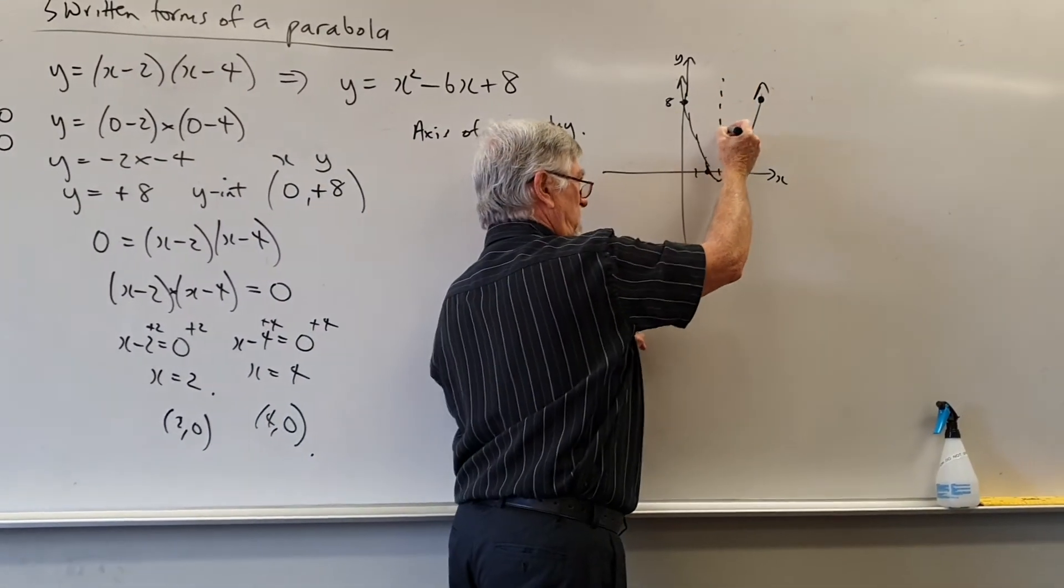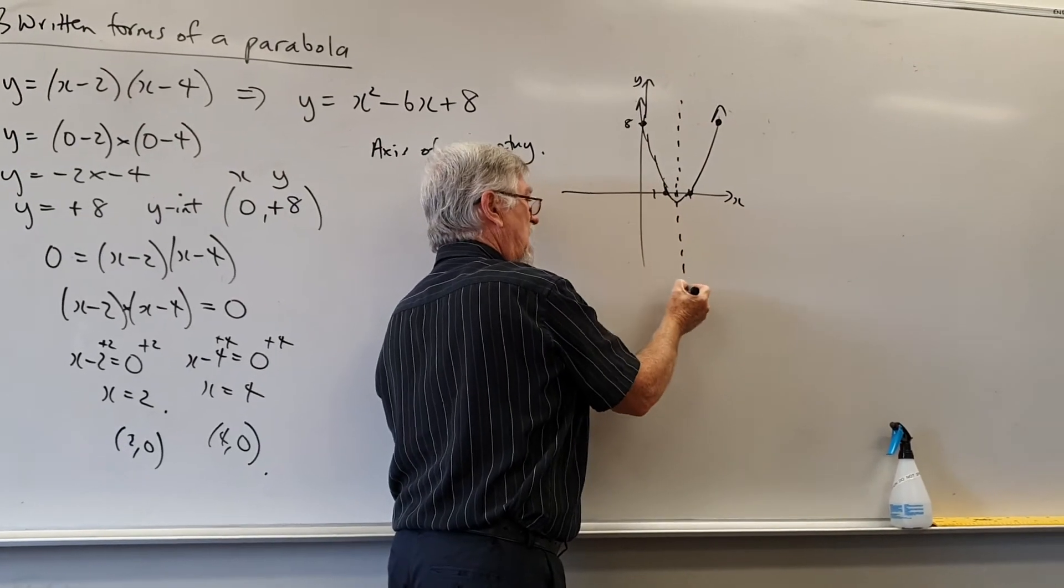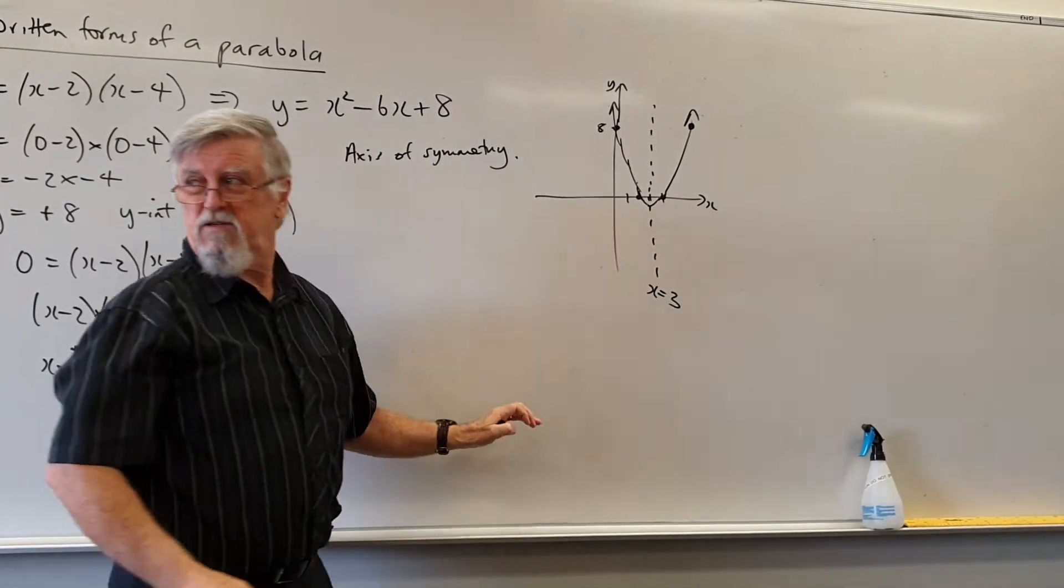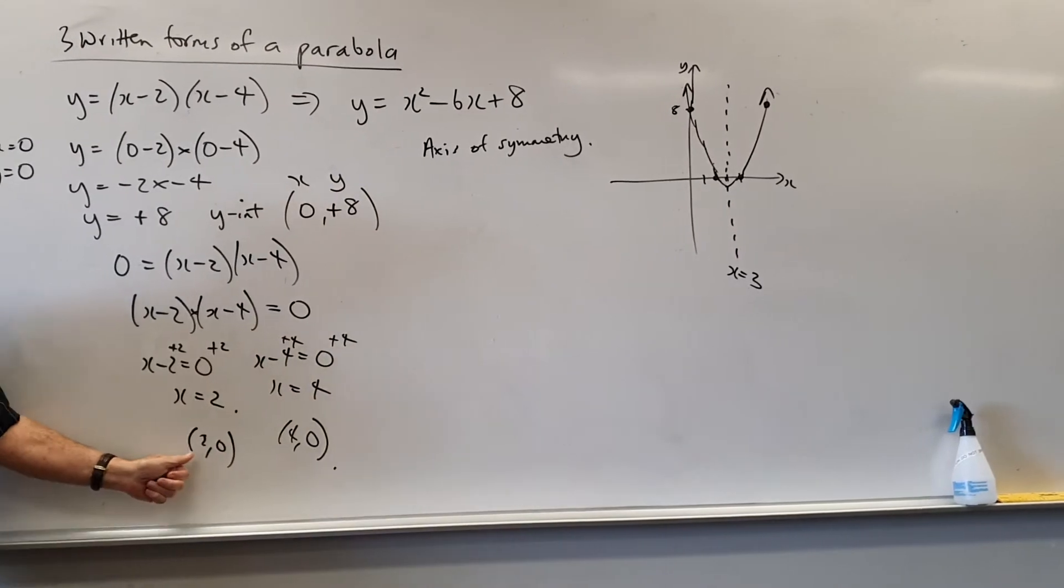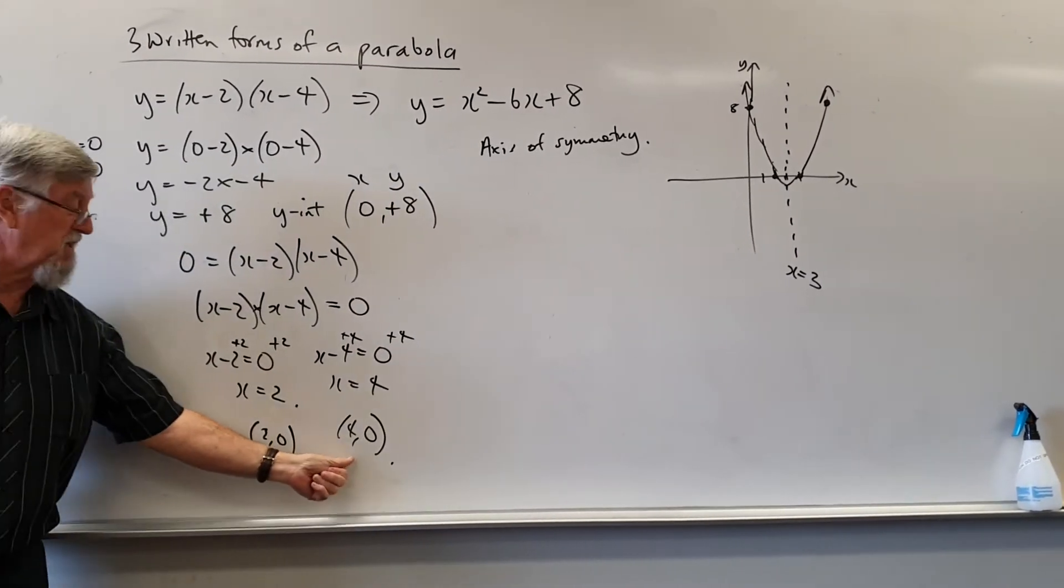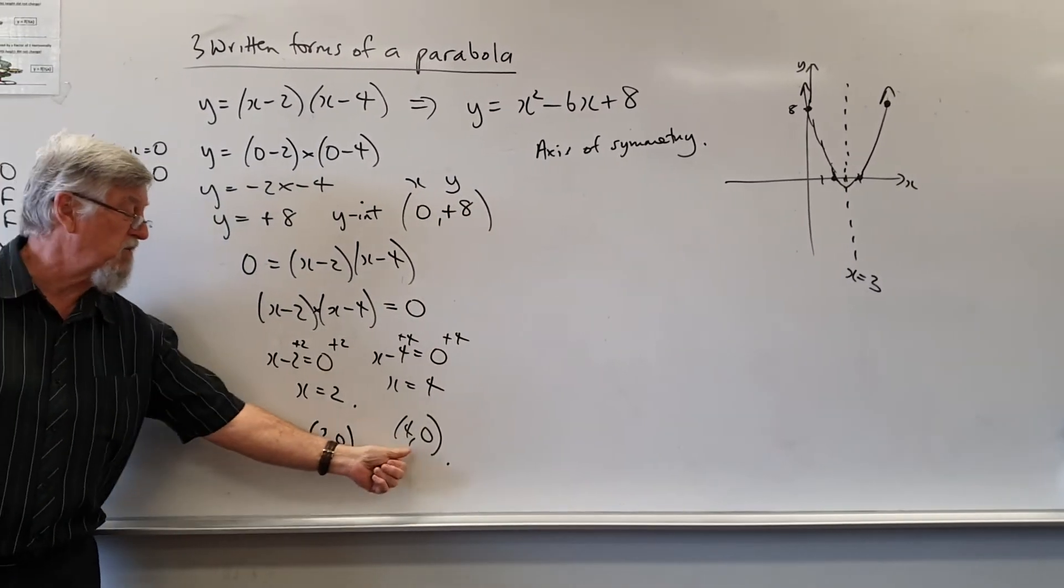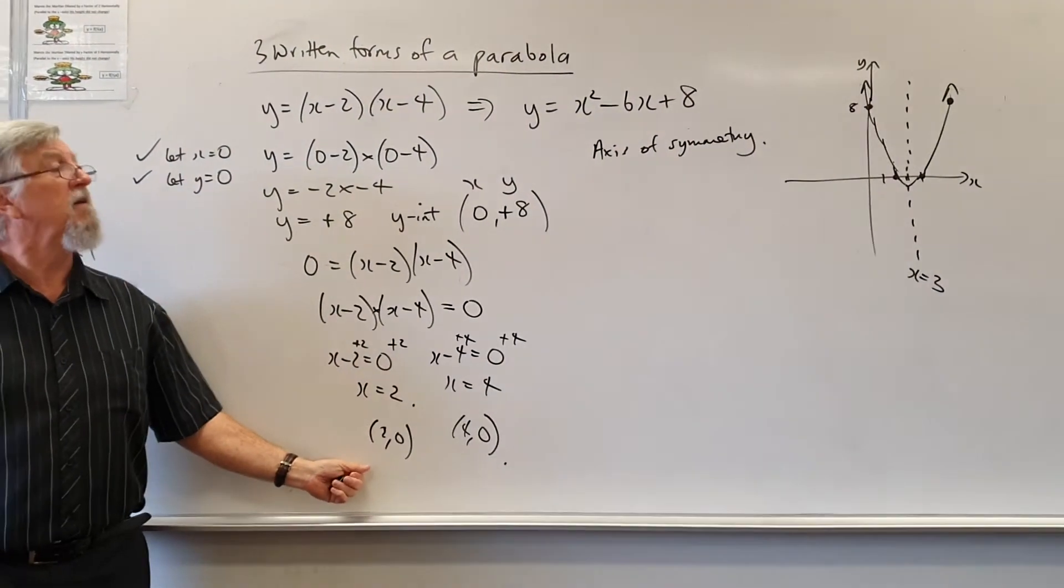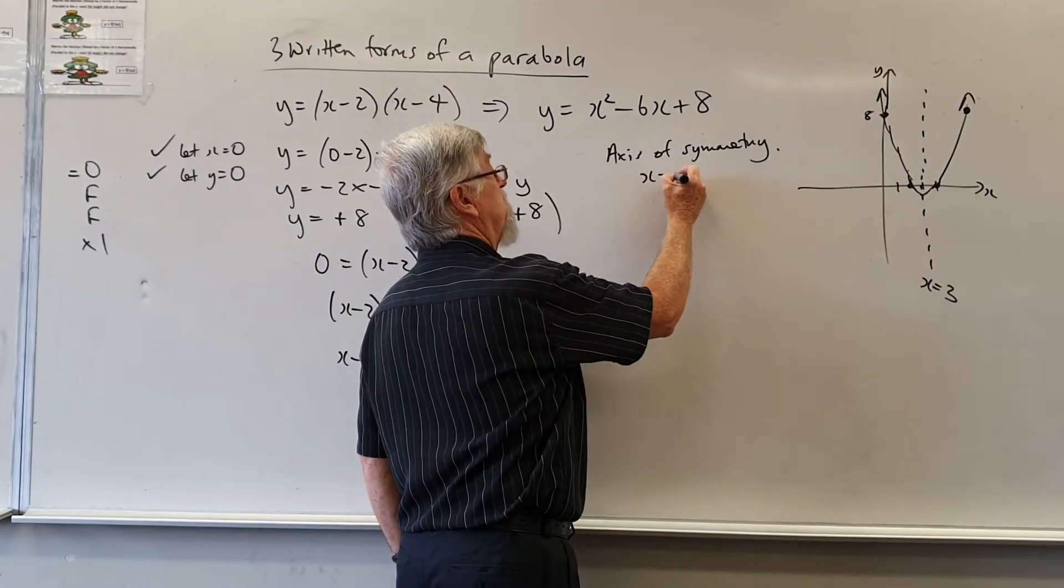For some reason some people really struggle with it. It's a simple rule. It's halfway between the x intercepts. Halfway between 2 and 4 is 3. So that's our axis of symmetry which we call x equals 3.